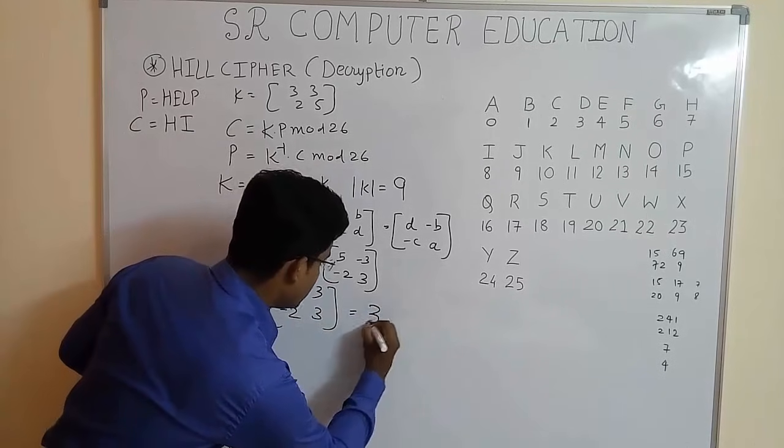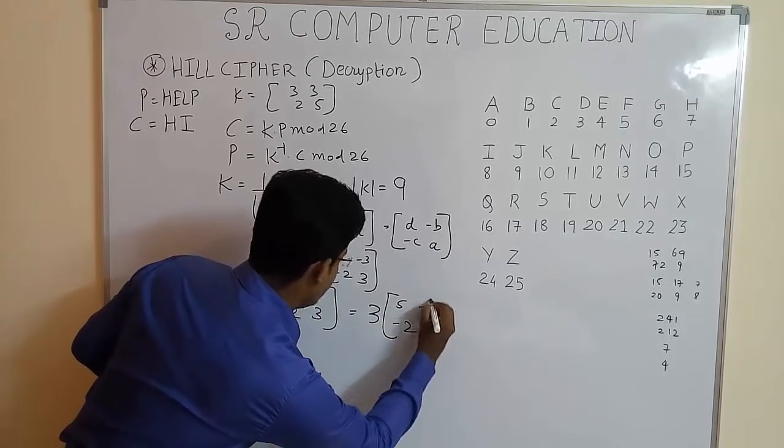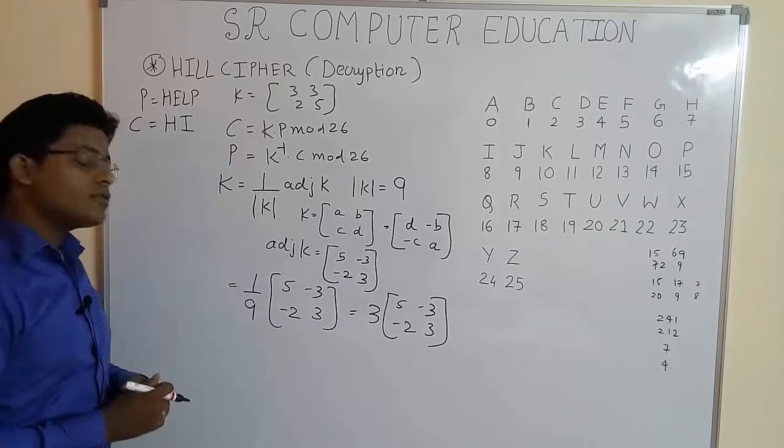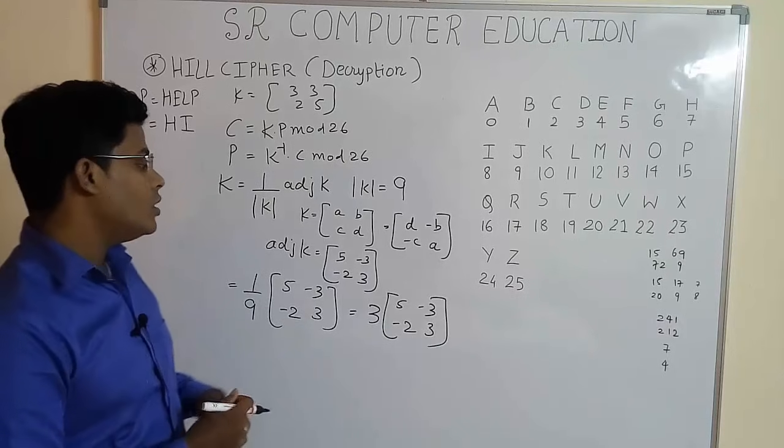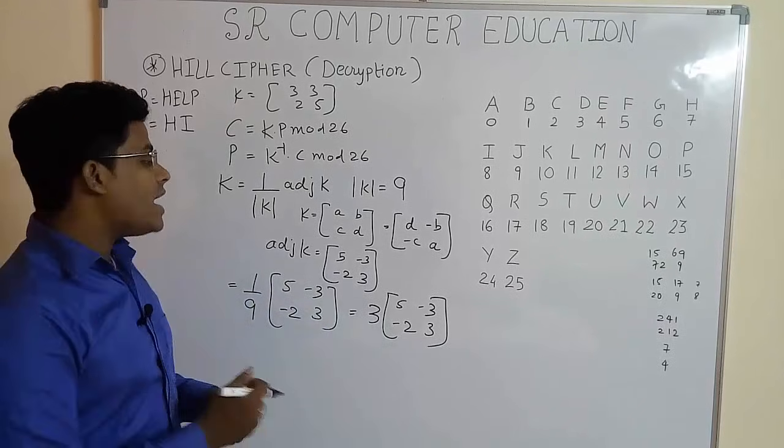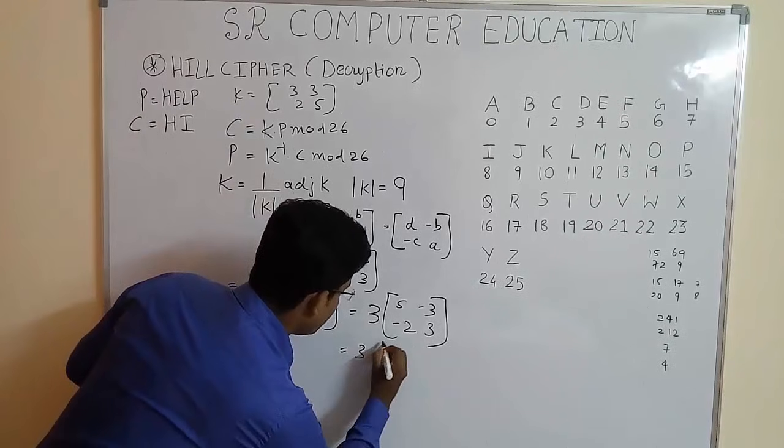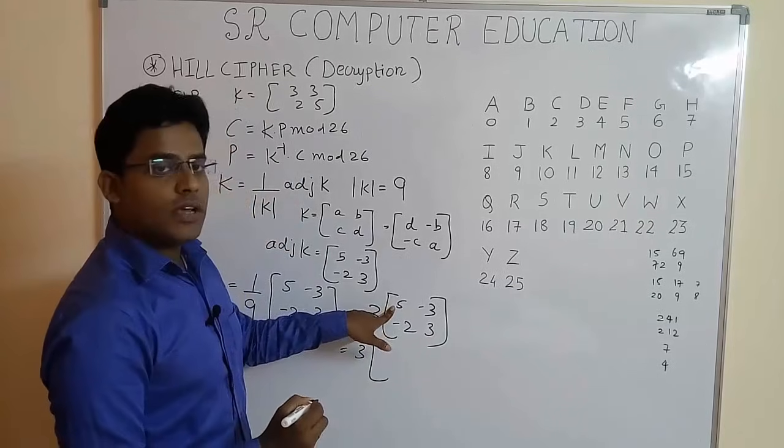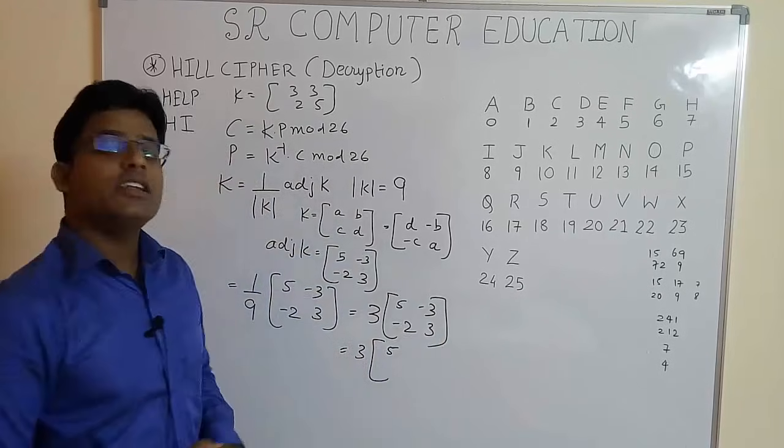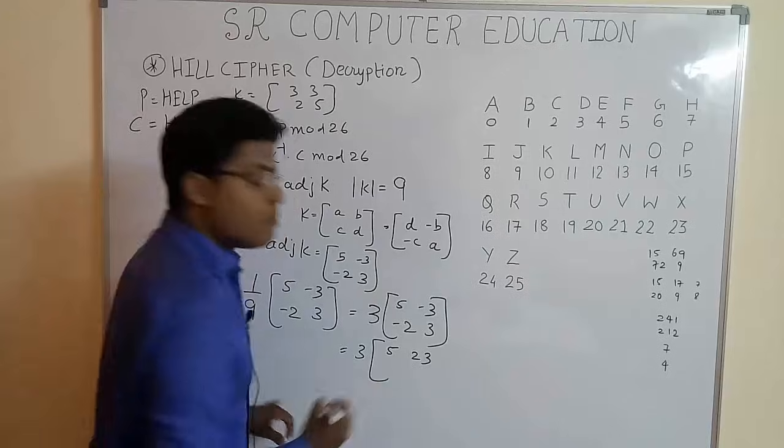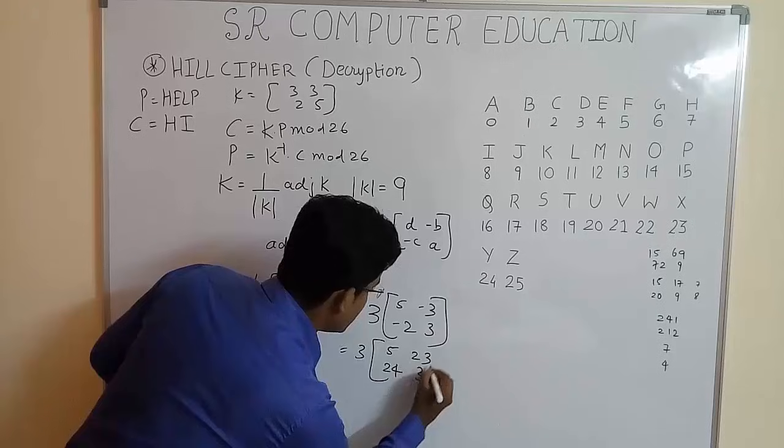So we get 3 into [5, -3; -2, 3]. Now in modulo 26 operation, we cannot have negative sign. So what you have to do? The numbers which are negative, you have to add 26 to that number. So we get [3, 5; -3 + 26 = 23; -2 + 26 = 24; 3].